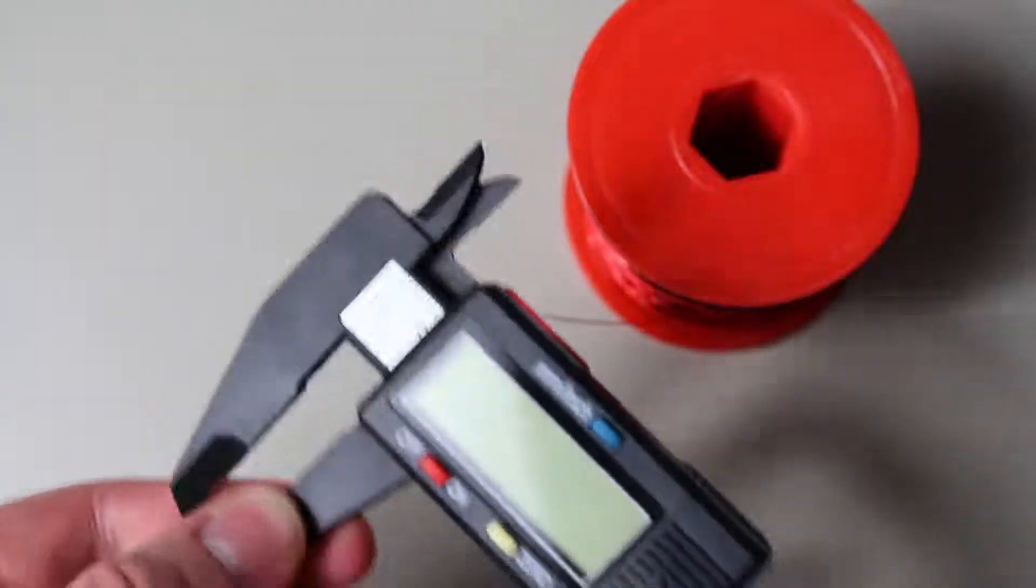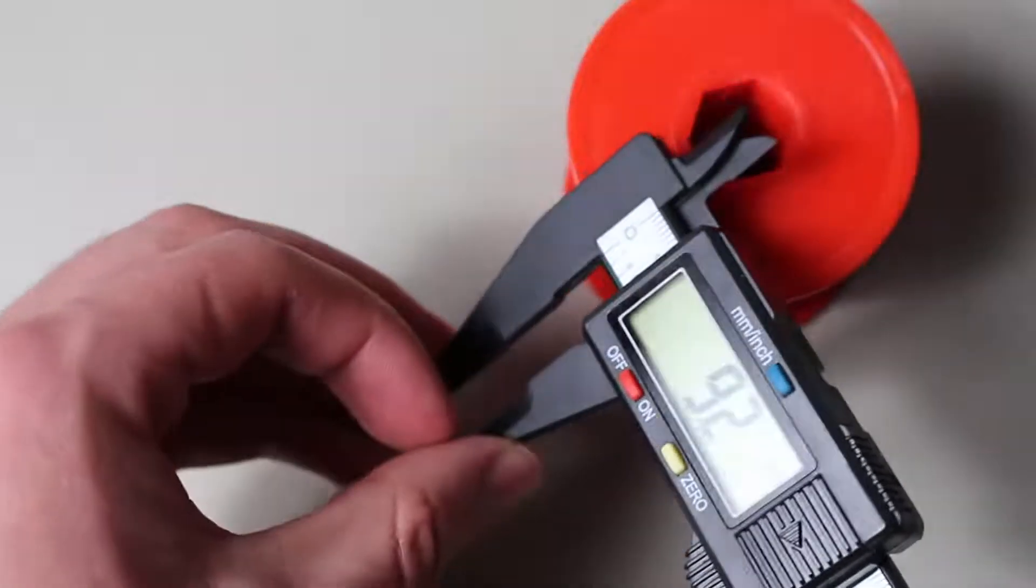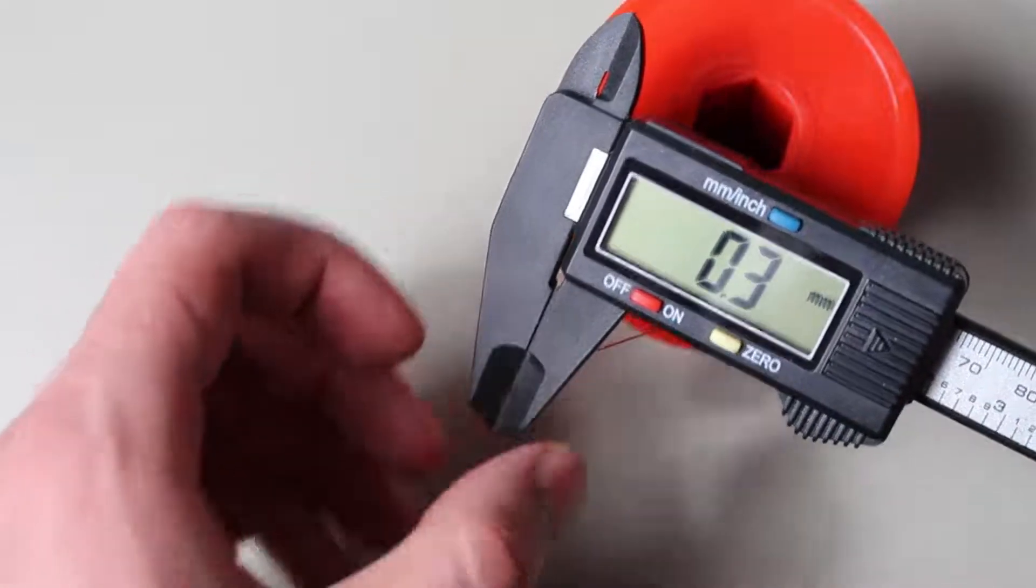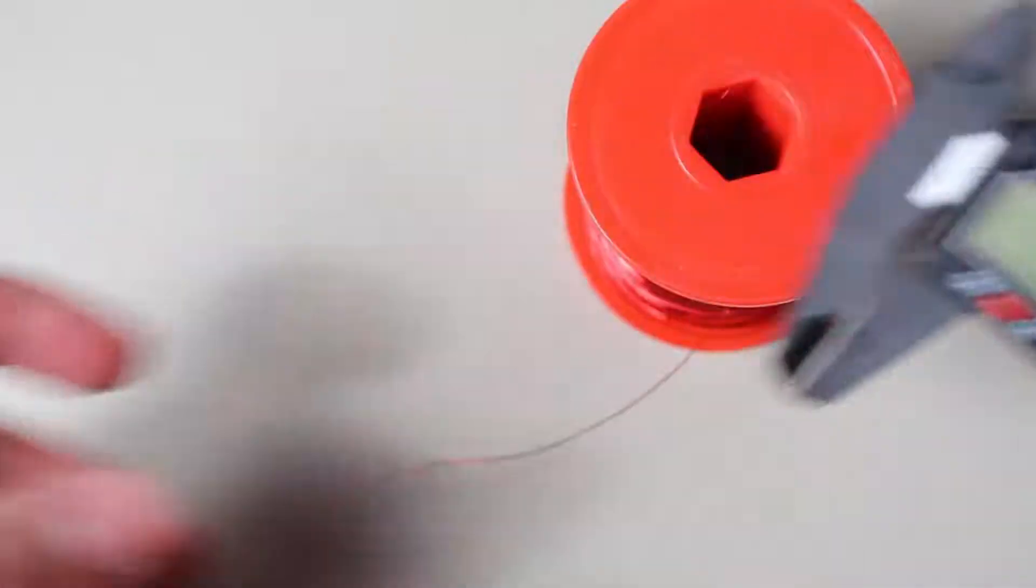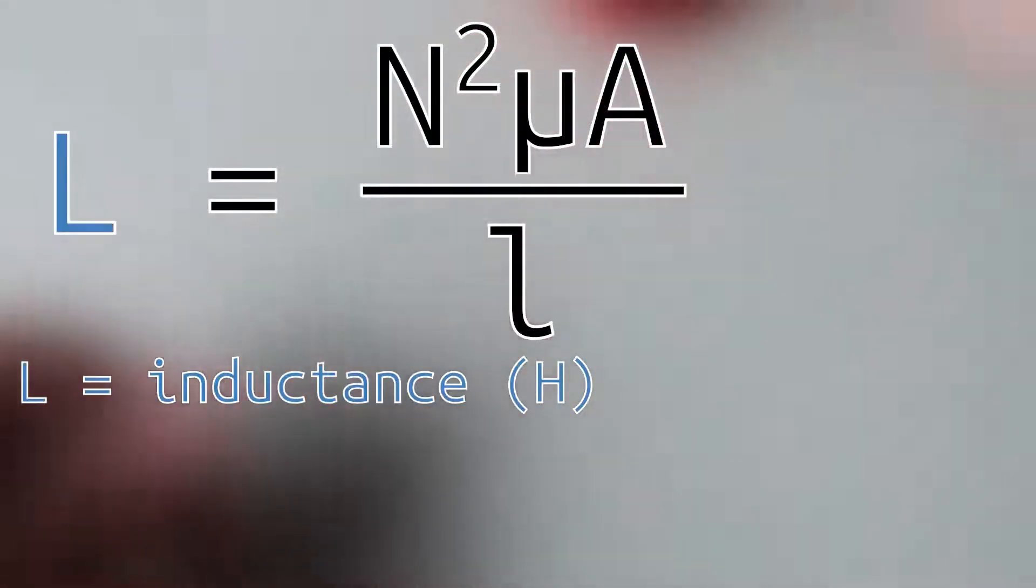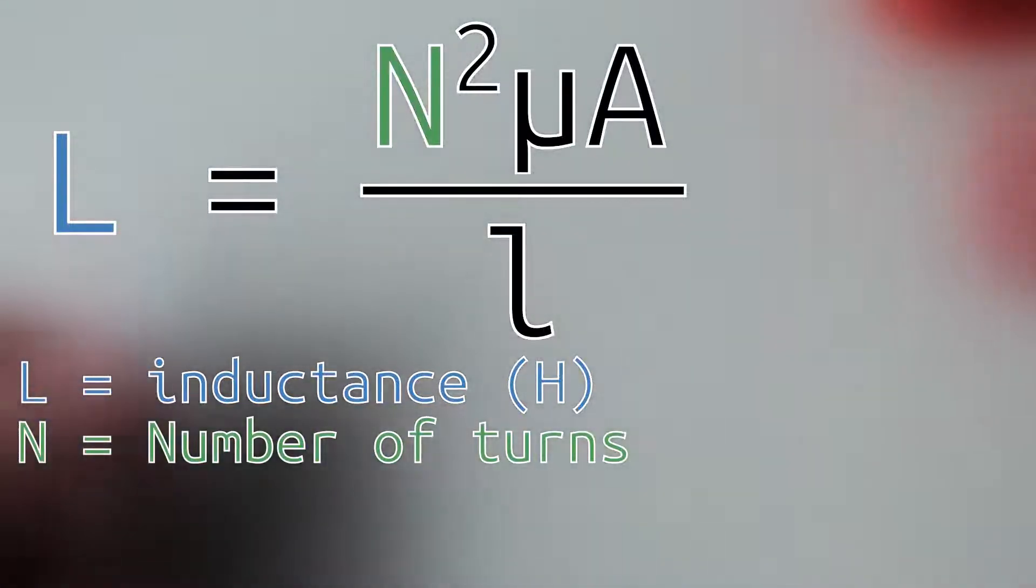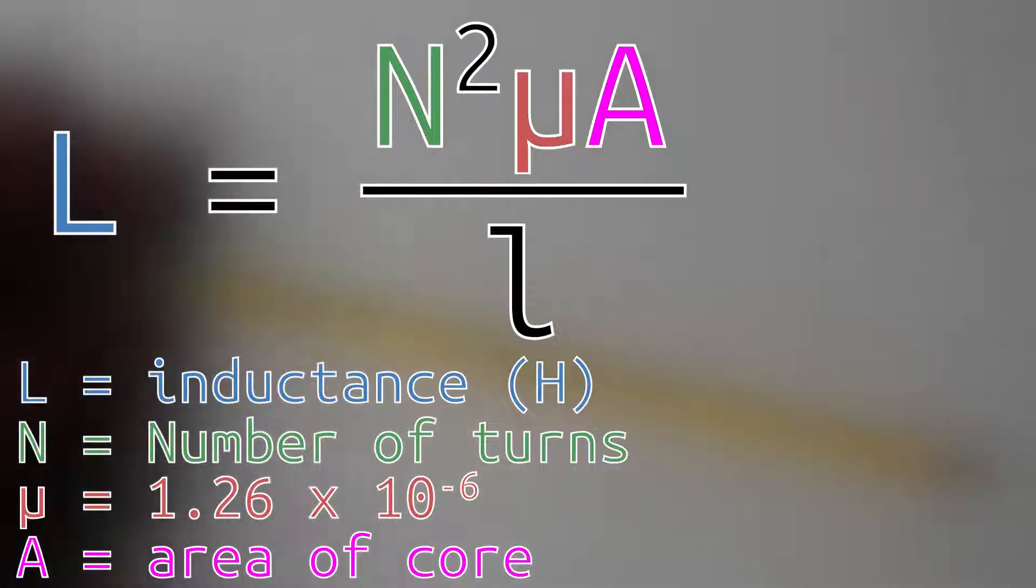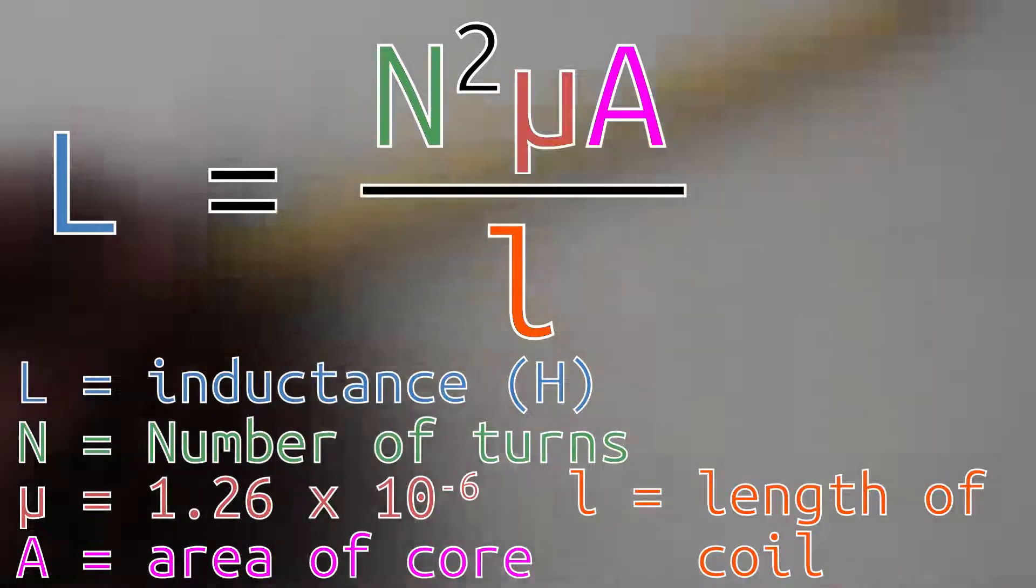You can follow along too, because the process is actually easier than you may think. I started with this 24 AWG enameled copper wire. For 1 MHz, I decided to aim roughly for 10 µH. So we can use the general inductance formula to calculate how many turns we need to get 10 µH. The inductance is this: L equals N²μA divided by l. L is the inductance in henries, N is the number of turns, μ is the permeability of the core, A is the area of the coil, and lowercase l is the length of the coil in meters.